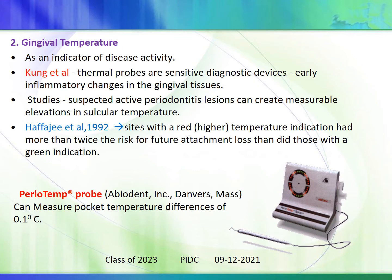Gingival temperature is used as an indicator of disease activity. Kang et al. stated thermal probes are sensitive diagnostic devices as early inflammatory changes are seen in gingival tissues. Studies suggest active periodontitis lesions create measurable elevations in sulcular temperature. Haffiji found that sites with higher temperature (red indication) were twice at risk for future attachment loss compared to green indication sites. The perioTemp probe can be placed inside the gingival sulcus and measure pocket temperature differences as small as 0.1°C.